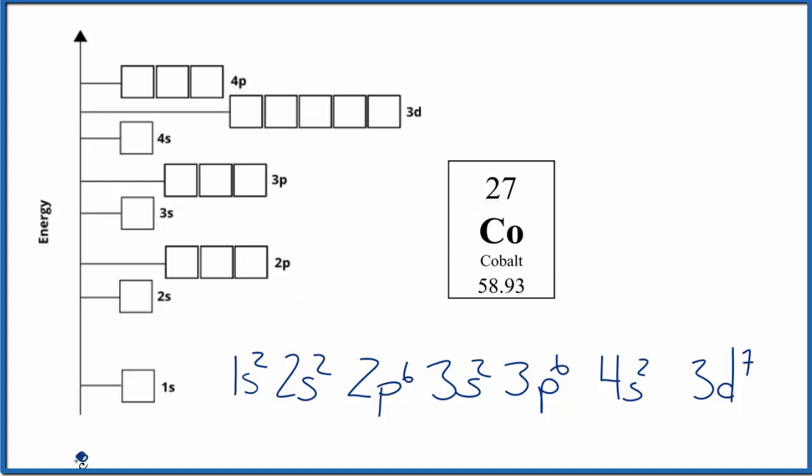So you could think of the nucleus right here. And then these are energy levels. Maybe think of it as shells around that nucleus. So we have 1s1. We put our first two in opposite directions there. 2s2. We get to 2p6. We spread them out first, and then we pair them up.